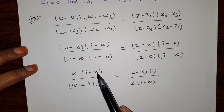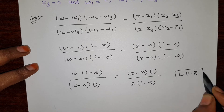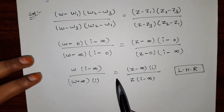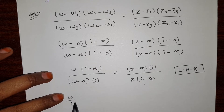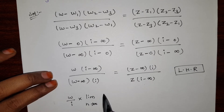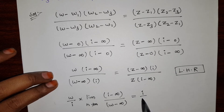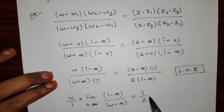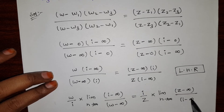If there is an undefined term, we need to use L'Hôpital's rule. Using L'Hôpital's rule, we can rewrite this step as w divided by i — this is the term without infinity so we keep it out — times the limit as n tends to infinity of (i minus infinity) divided by (w minus infinity). Here, i by z is the term without infinity so keep it out, times the limit as n tends to infinity of (z minus infinity) divided by (i minus infinity).